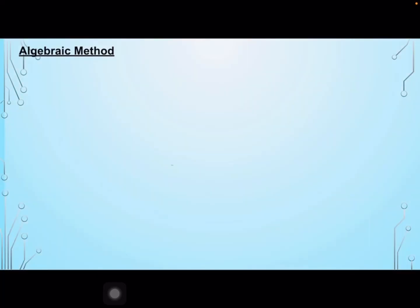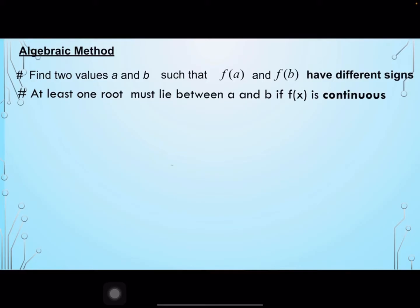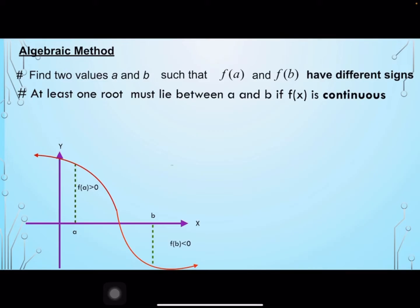The algebraic method is another way to find an initial value for an equation that cannot be solved exactly. We find two values a and b such that f(a) and f(b) have different signs. At least one root must lie between a and b if f(x) is continuous. There should be a value where the curve cuts the x-axis to become a root of the function.